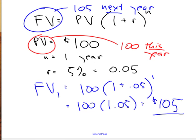Let's say the present value is $100. That's what you have now, this year. You're going to put it in the bank for one year, so n equals 1, and the interest rate is 5%, or 0.05. Using the formula,